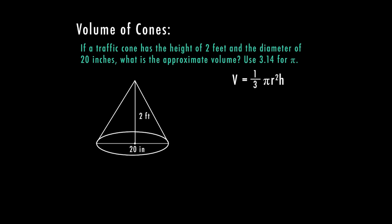So if a traffic cone has the height of two feet, and the diameter of 20 inches, what is the approximate volume, and they want us to use 3.14 for pi. So here I know that it's a cone, it tells me the shape, and it tells me that it wants to know the volume. So we know exactly what formula we're going to use, we know exactly what shape we have.